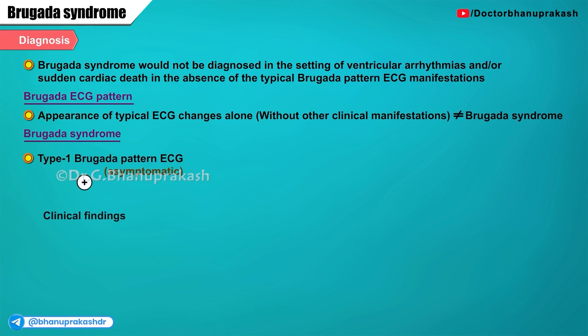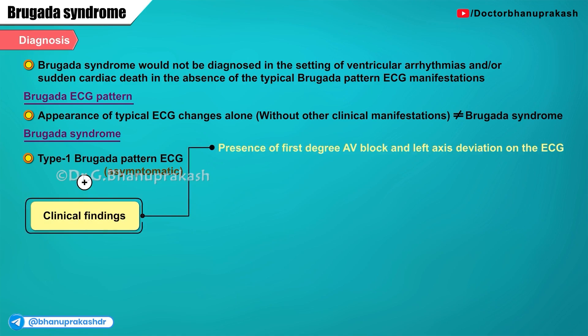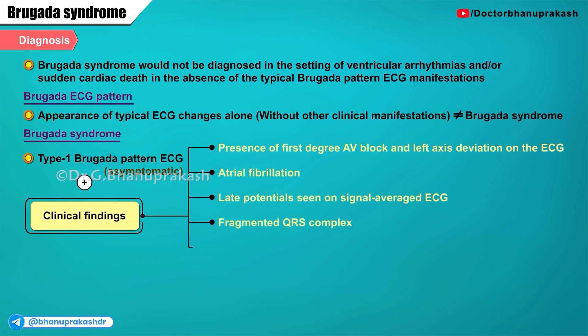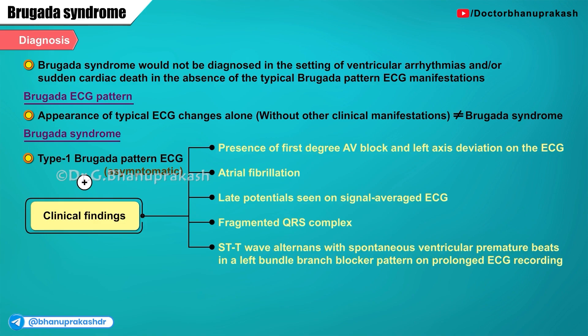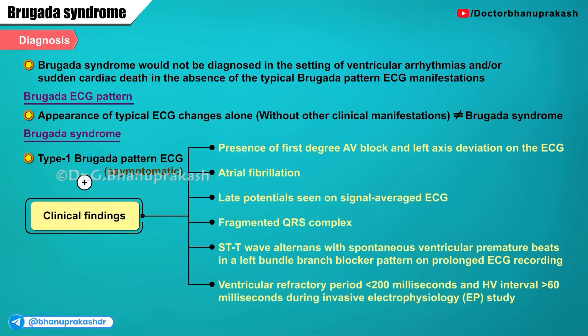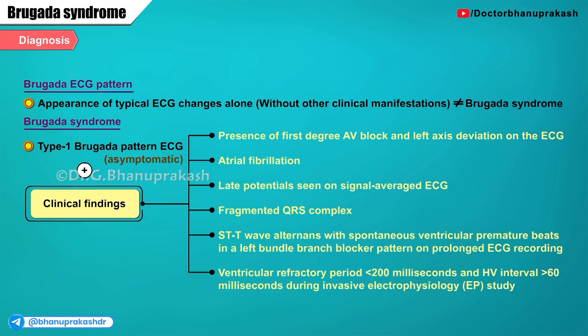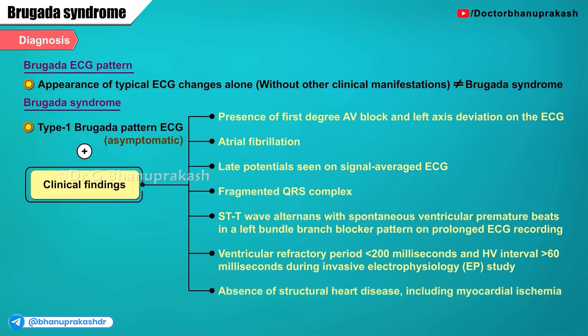For a patient with type 1 Brugada pattern ECG findings who is otherwise asymptomatic, clinical findings that would support the diagnosis of Brugada syndrome include: the presence of first-degree AV block and left axis deviation on the ECG, atrial fibrillation, late potentials seen on signal-averaged ECGs, fragmented QRS complex, ST-to-T wave alternates with spontaneous ventricular premature beats in a left bundle branch block pattern on prolonged ECG recording, ventricular refractory period less than 200 ms, HV interval more than 60 ms during invasive electrophysiology study, and absence of structural heart disease including myocardial ischemia.